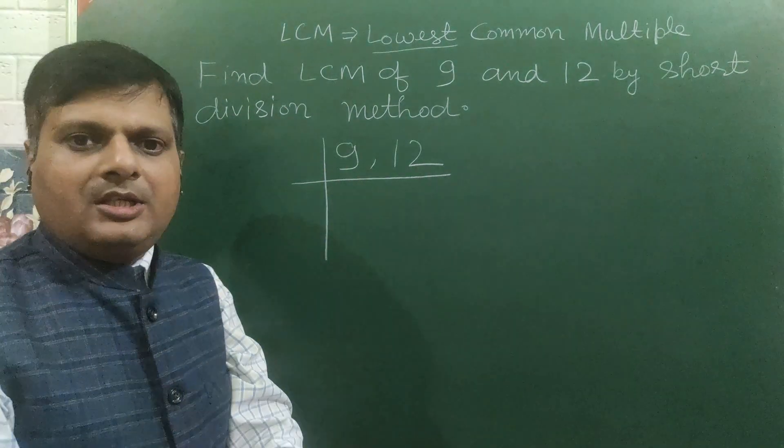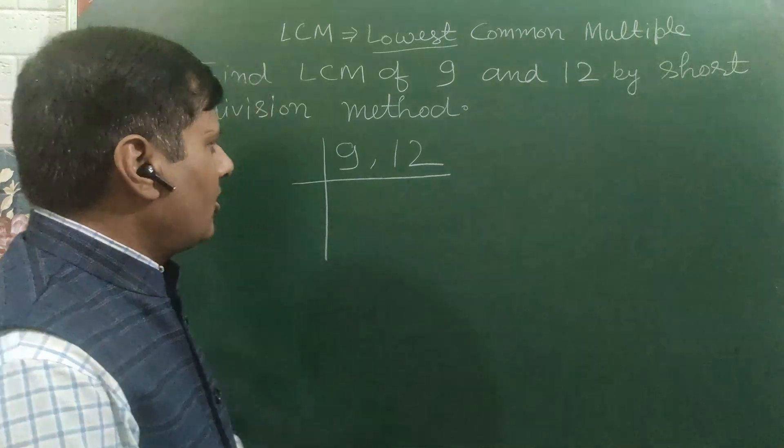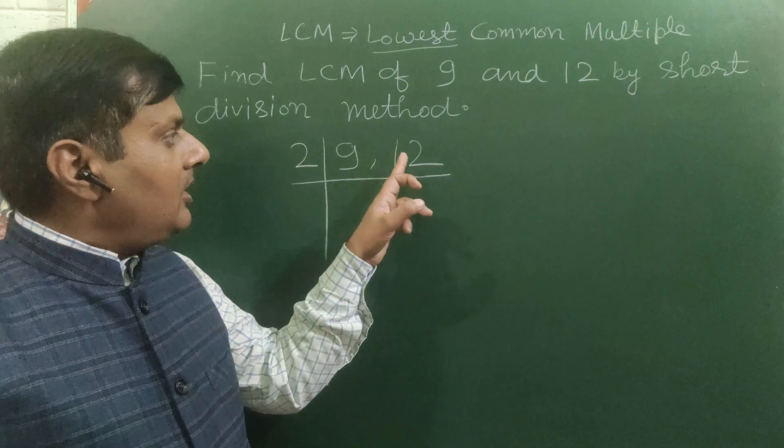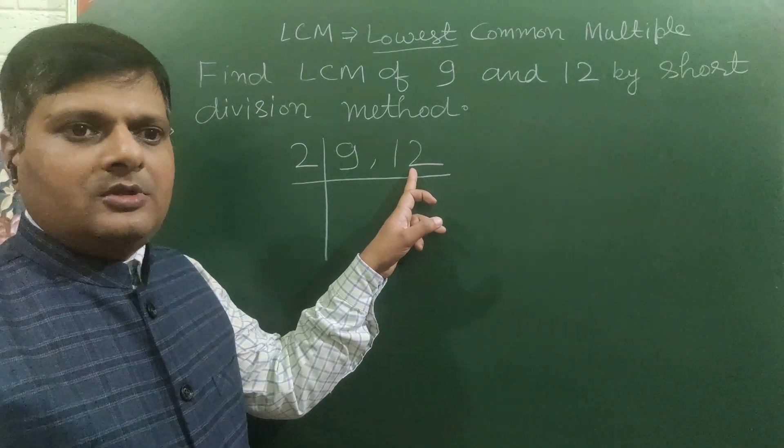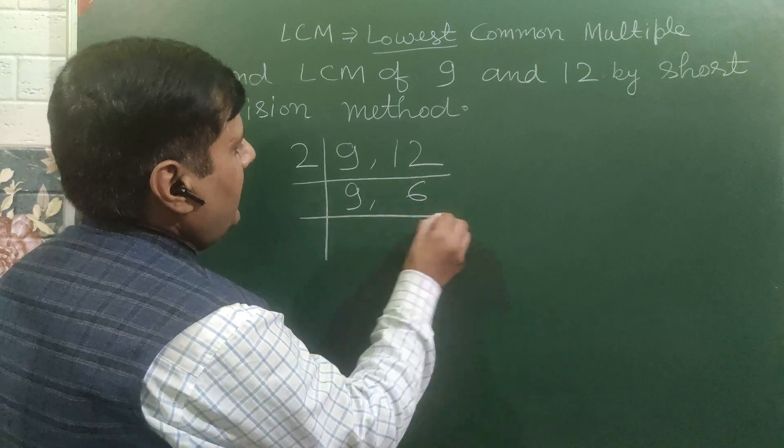We will see what are the smallest prime factor, that is 2. You write 2. 9 is not divisible by 2, but 12 is divisible by 2. You write 9 as it is, 2 sixes are 12.